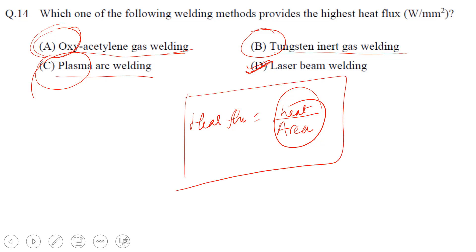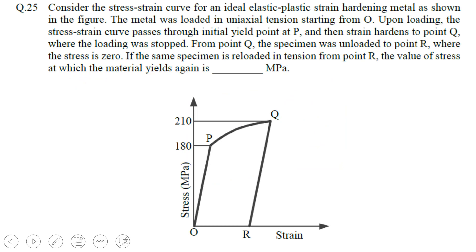Now let us move to the next question. Consider the stress-strain curve. This is the stress-strain curve which is given over here for an ideal elastic-plastic strain hardening metal as shown in the figure. The metal was loaded in uniaxial tension starting from O. Upon loading, the stress-strain curve passes through the initial yield point. This is the yield point P, and then it strain hardens to point Q, where the loading was stopped. After this, there was no loading.